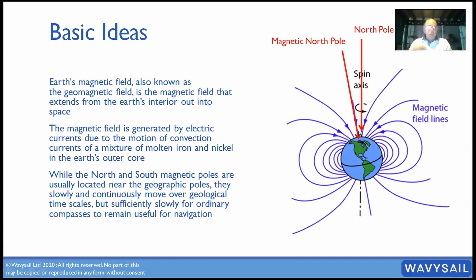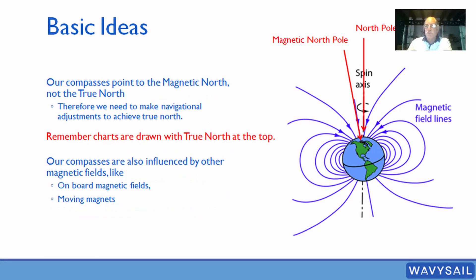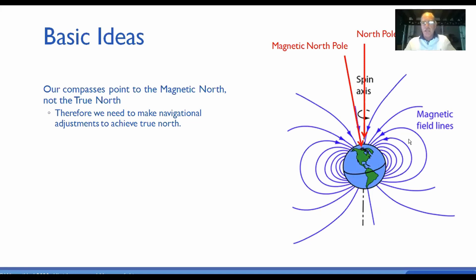The poles move sufficiently slowly for ordinary compasses to remain useful for navigation. The true north pole and the magnetic north pole are not the same, and likewise in the south. Our geographical poles are the axis we spin on. The magnetic north does not share that same axis and is continuously moving, which makes sense because the molten nickel and iron inside the earth is also still moving. So our compass points to magnetic north, not true north — we need to make navigation adjustments.